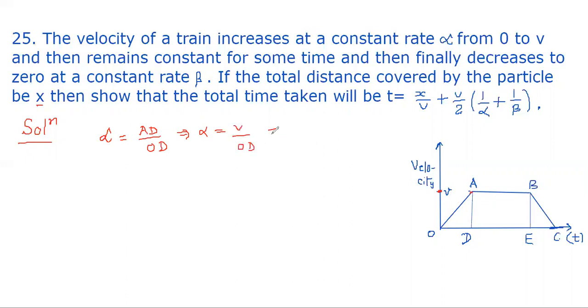Similarly, we can get beta. Beta equals BE divided by EC. BE equals AD which is v, divided by EC, which implies EC = v/beta.